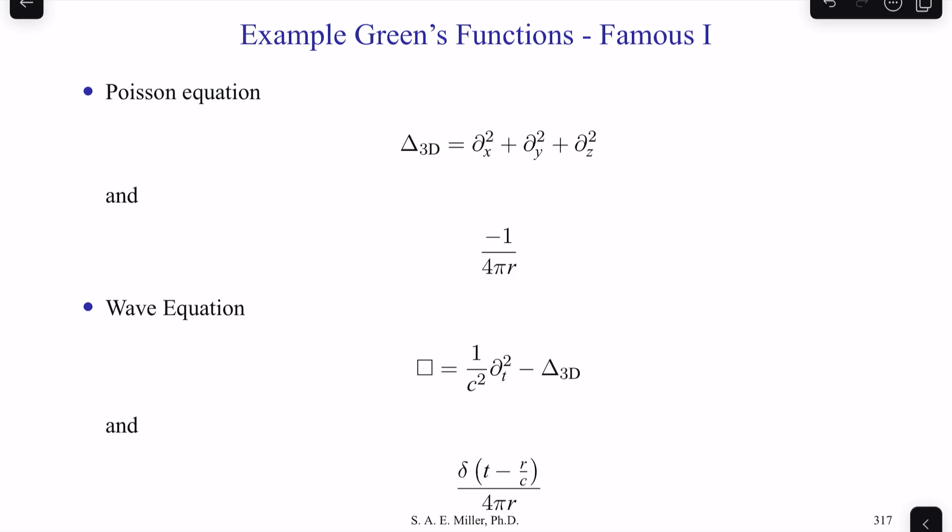Let's look at example Green's functions in the most basic PDEs, partial differential equations. The Poisson equation, which is partial^2/partial x^2, partial^2/partial y^2, plus partial^2/partial z^2. So this could be like a view. The corresponding Green's function is negative 1 over 4πR. That's like a diffusion type Green's function.